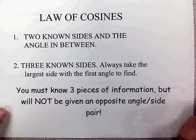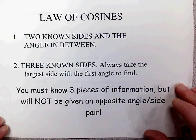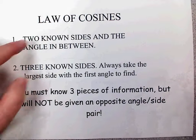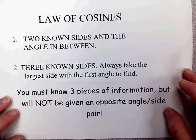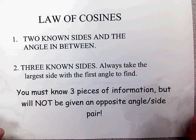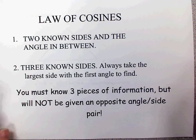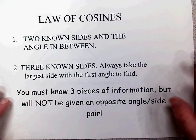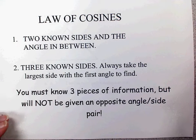Now we're going to look at using the law of cosines. These are the two situations where you can use them: where you know two sides and the angle that's between them, or if you know all three sides. Basically, if you cannot use the law of sines, then you're going to use the law of cosines.